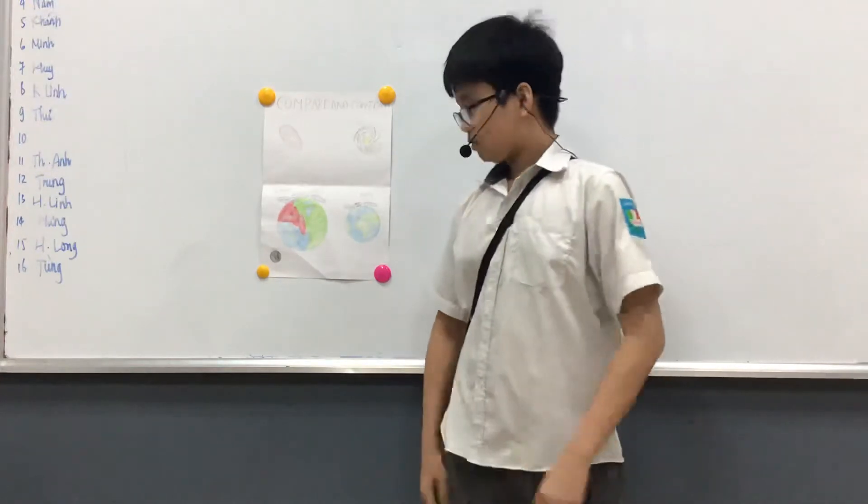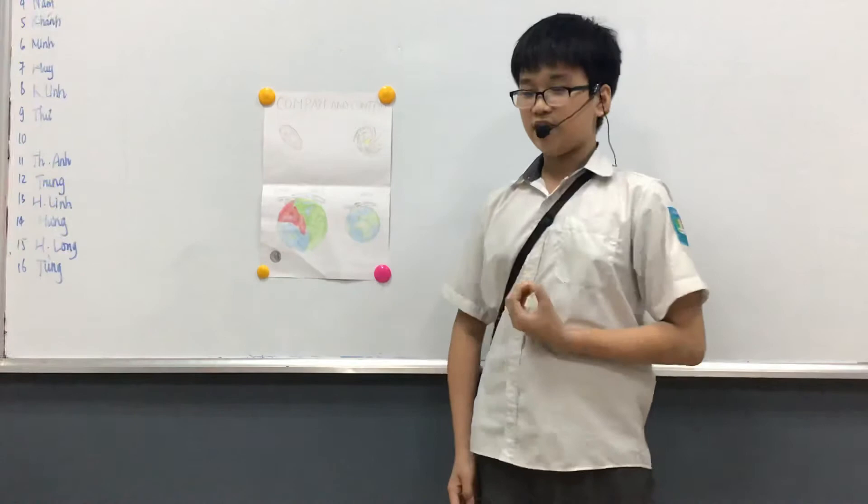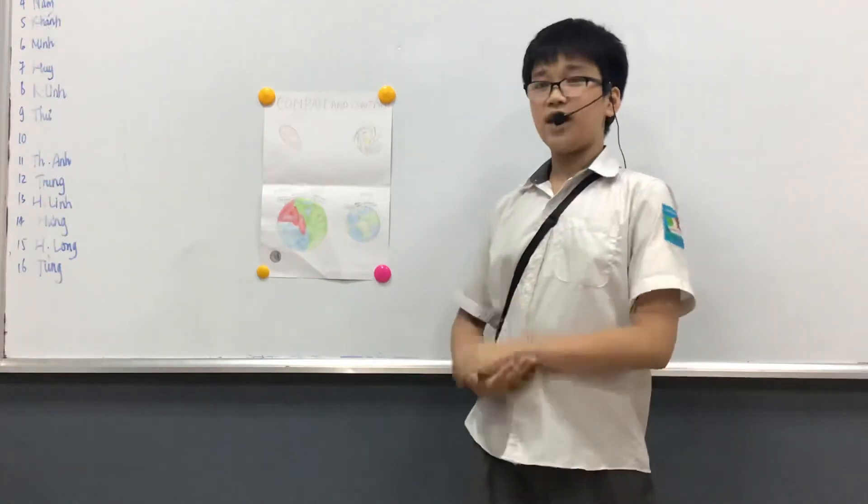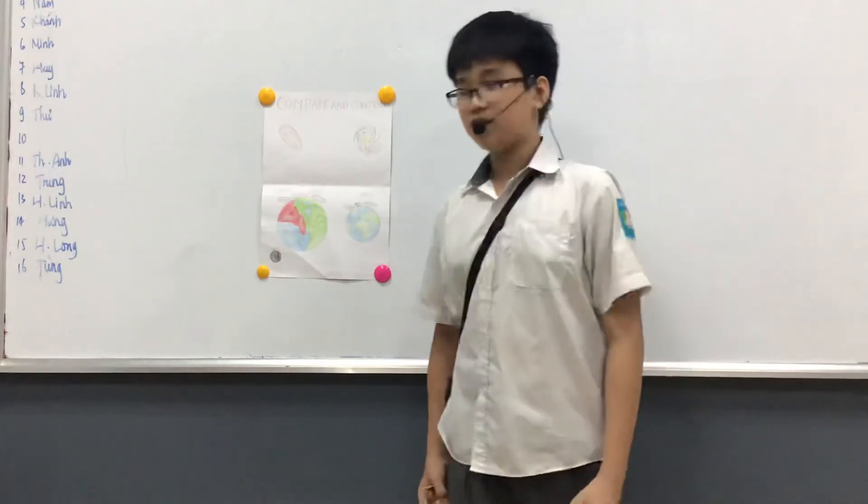Next, Alpha has cloud moons, has acid rain and diamond rain, but Earth doesn't have these.